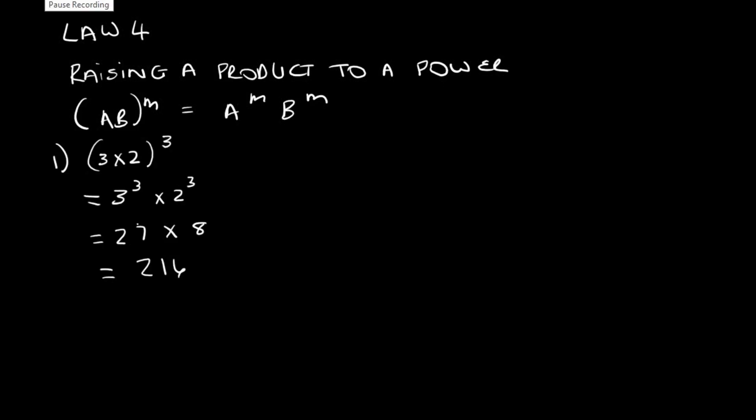So when we have 3 times 2 to the power 3 on the outside of the bracket, we need to distribute that 3. So it will be 3 to the power 3 times 2 to the power 3. That will give us 27 multiplied by 8, which is 216.